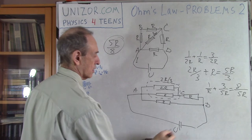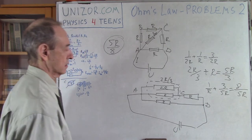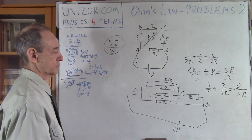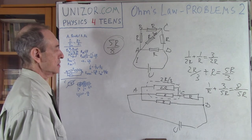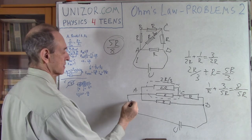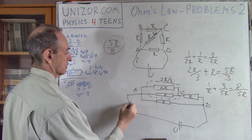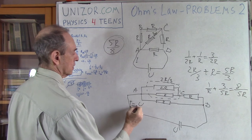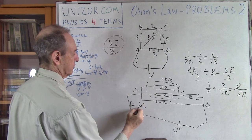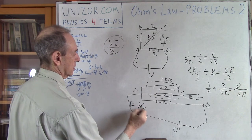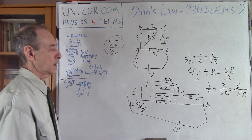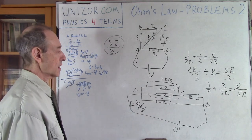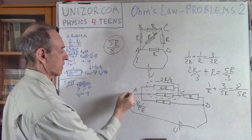If you know the voltage of the source of electricity, the current I equals U divided by 5R/8. That's my current in the common area, in the common wire.